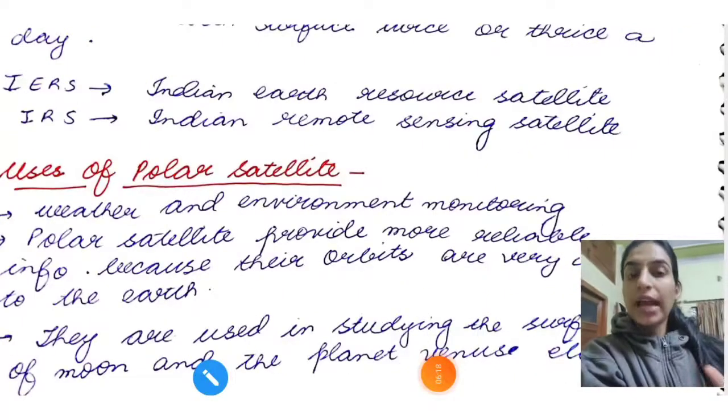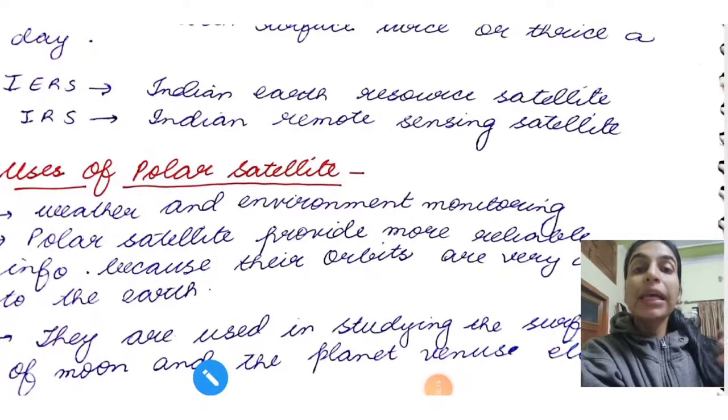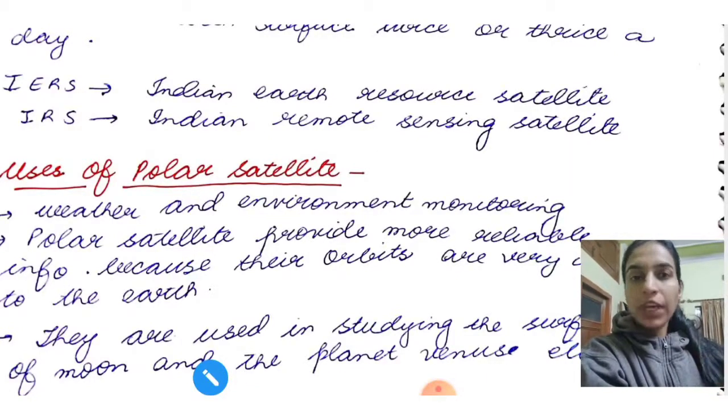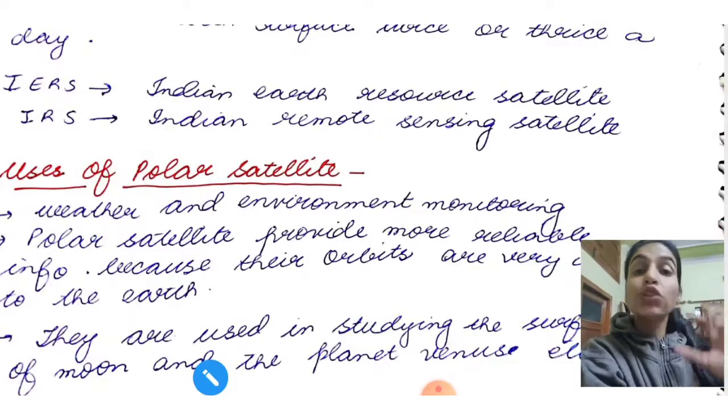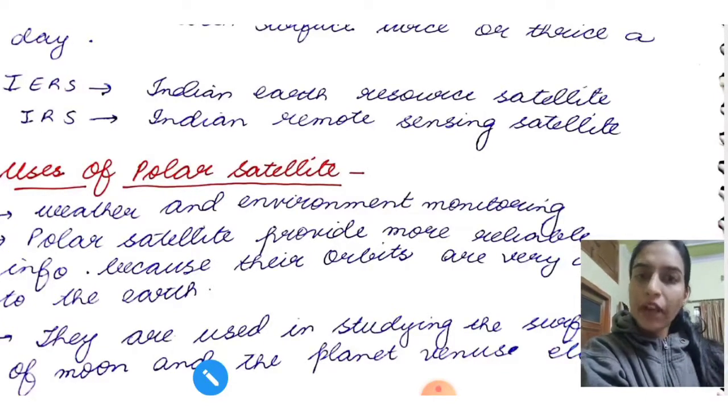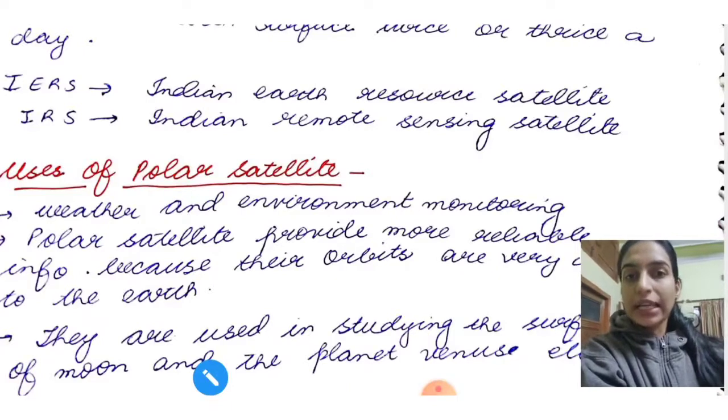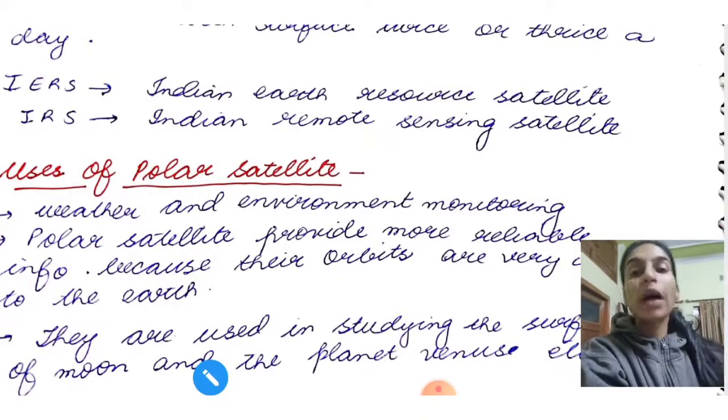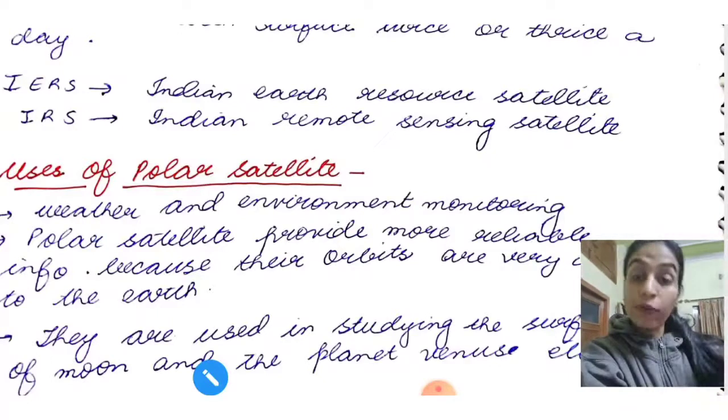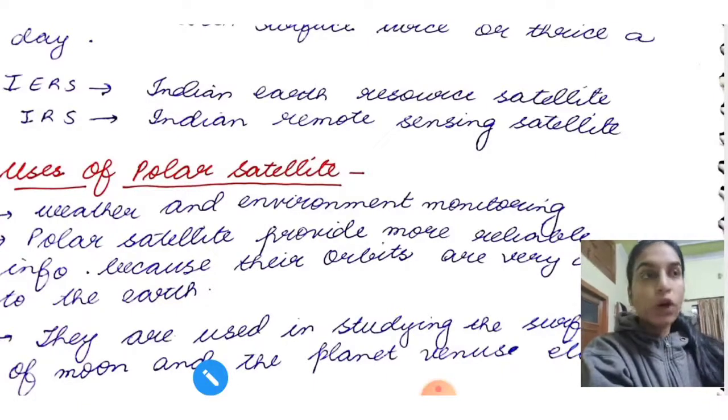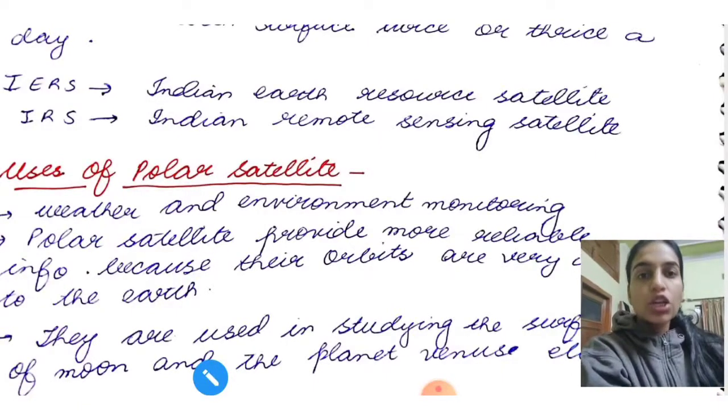So geostationary satellite, if I ask in one day how many times will it completely cover or see the earth, what's the answer? One time. Because its time period is also 24 hours. But polar satellites, their radius is quite small as compared to the geostationary satellite. So what do they do? In one day, they cover the entire earth 2 to 3 times. They completely revolve 2 to 3 times. So obviously, polar satellites are better because they give us information about the same thing 3 times.